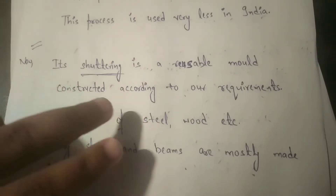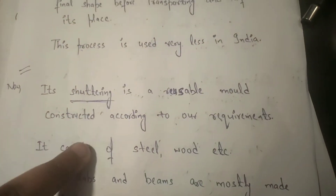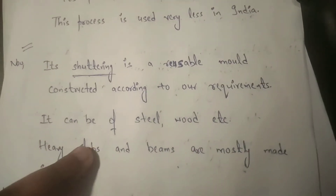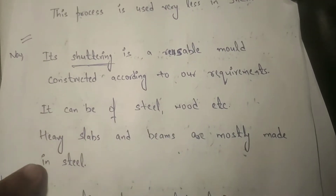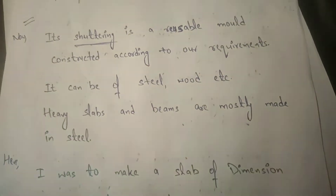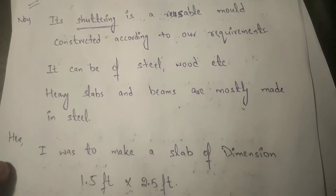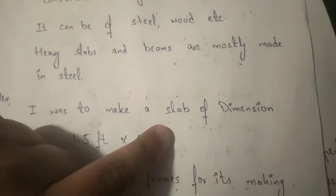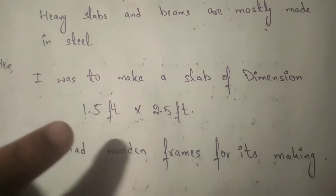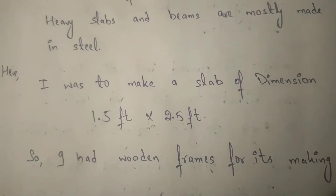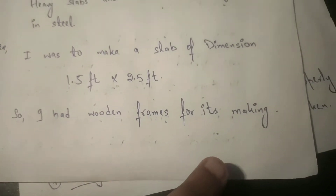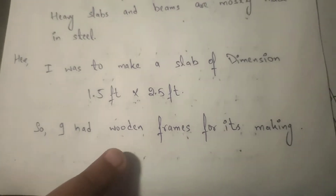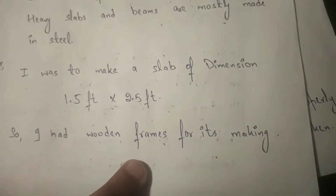The shuttering is a reusable mold constructed according to our requirements. It can be of steel, wood, etc. Heavy slabs and beams are mostly made using steel. As you can see here, this is the slab constructed for my site — dimensions of 1.5 foot by 2.5 foot — so I had wooden frames for its making. I have made the shuttering with wooden frames.